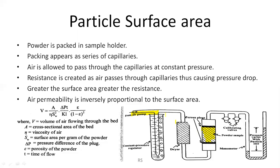Resistance is created as air passes through the capillaries, causing a pressure drop; the greater the surface area, the greater the resistance, so air permeability is inversely proportional to surface area. The formula used is: V = (A / (η · S_W² · W)) · (ΔP · t / K₁) · (ε / (1 − ε)²), where V is the volume of air flowing through the bed, A is the cross-sectional area of the bed, η is the viscosity of air, S_W is the surface area per gram of powder, ΔP is the pressure difference across the plug, ε is the porosity of the powder, and t is the time taken to flow.